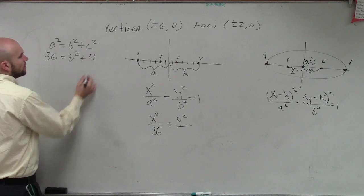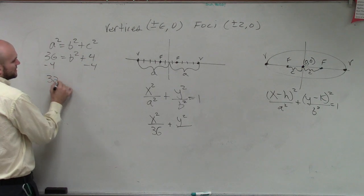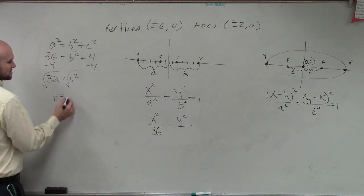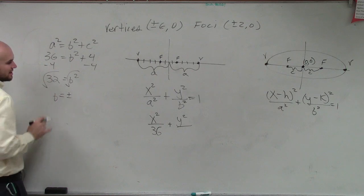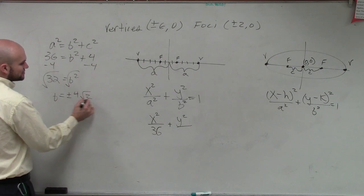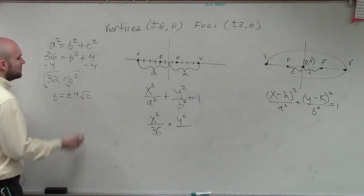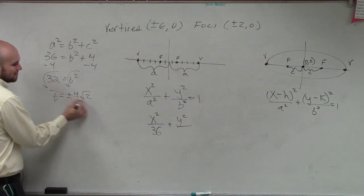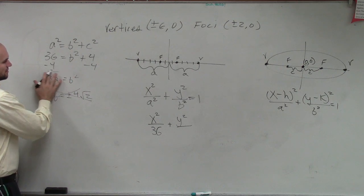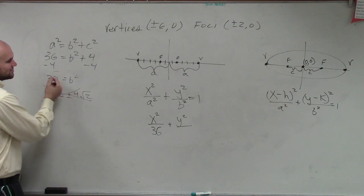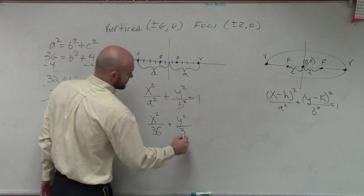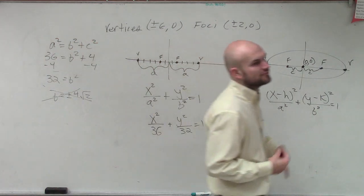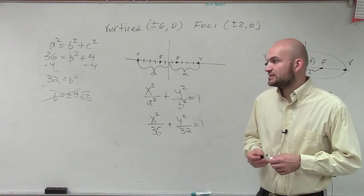I get 32 equals b squared, square root, square root, b equals plus or minus. Take the, simplify this into 4 radical 2. Yes. But, we don't need to do that, right? Because all they're asking us is what is b squared. So, we can just leave it like that. b squared equals 32. Okay? Because remember, you're looking for b squared. So, we don't need to solve for b. We just need to know what b squared is.